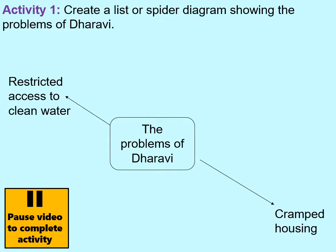In this first activity, I would like you to create a list or a spider diagram showing the problems of Dharavi. Pause the video, put down the two ideas I've given you and then add as many more as you can. If in your spider diagram you can explain why these things are a problem, that would be great. Pause now.